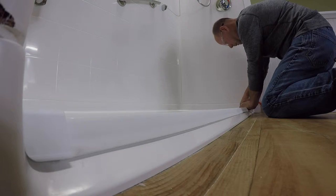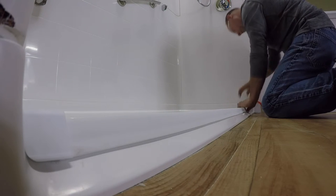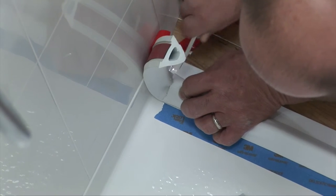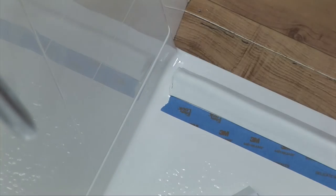Here you want to pull the dam until it touches the wall. Next, cut the dam approximately one half inch from the vertical wall.